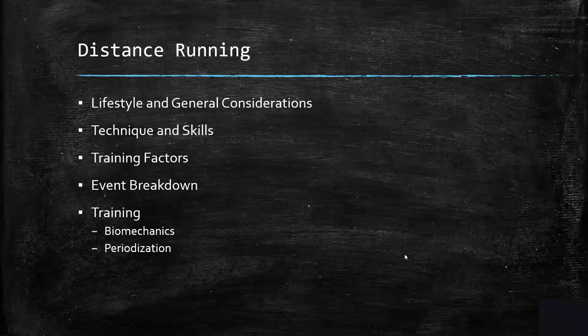Hurdle mobility and hurdle training come into play with steeplechase. There are general elements of how to coordinate training, and we'll look at charts breaking down the differences between aerobic and anaerobic training — what specific races benefit from different types of training. We'll look at the distribution of training for an 800-meter runner versus a 10,000-meter runner. Then we'll go through an event breakdown and slightly touch on biomechanical considerations and periodization components.